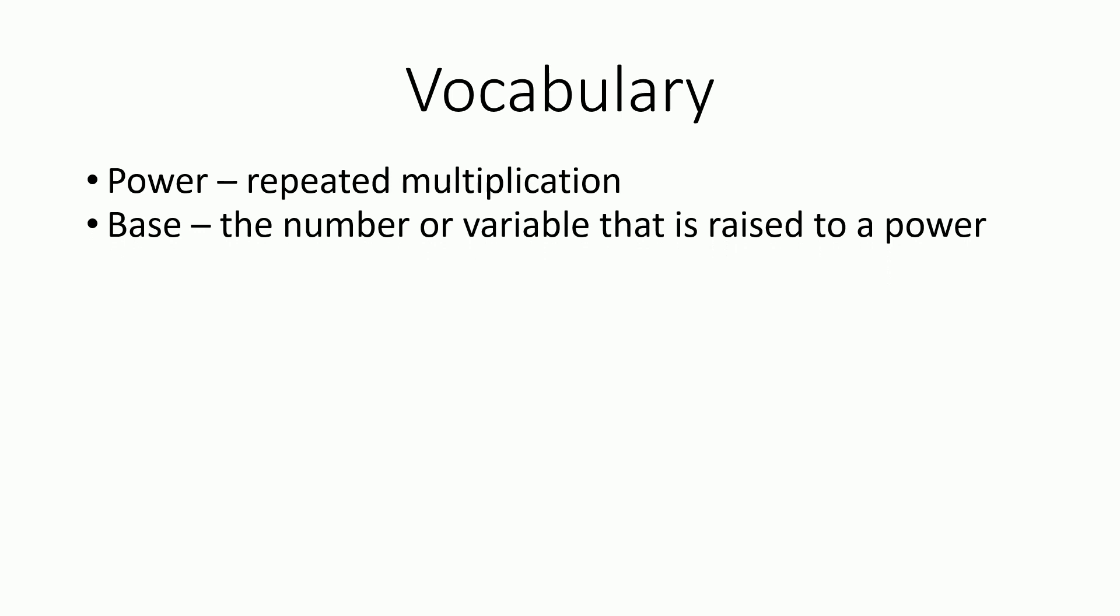The base is the number or variable that is raised to a power. So it's the bigger number that we write that is raised to a power. The exponent is the number or variable that represents the power itself. It's written a little bit smaller to the right and a little bit above the base, so that we know that that base is raised to that power.